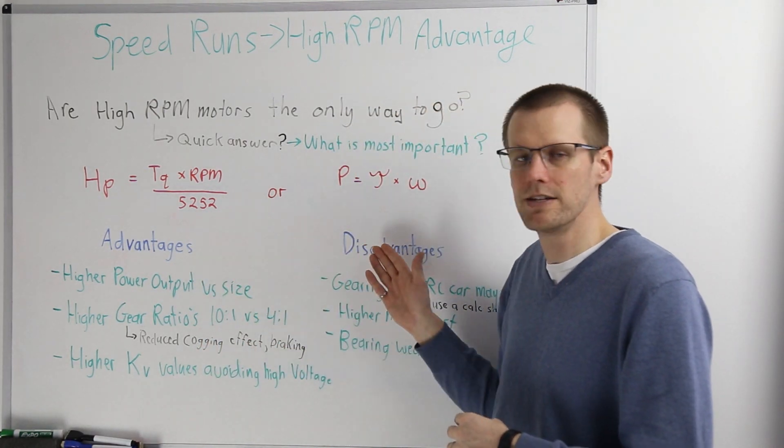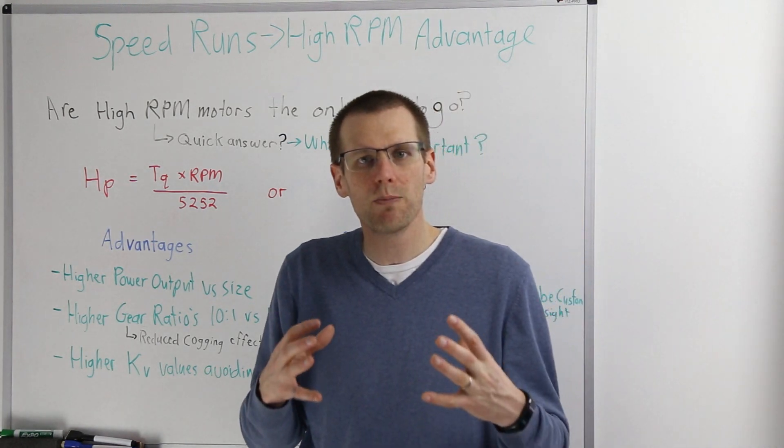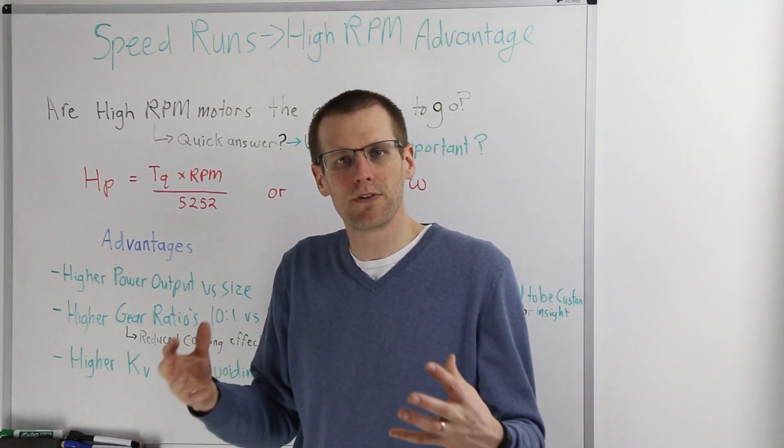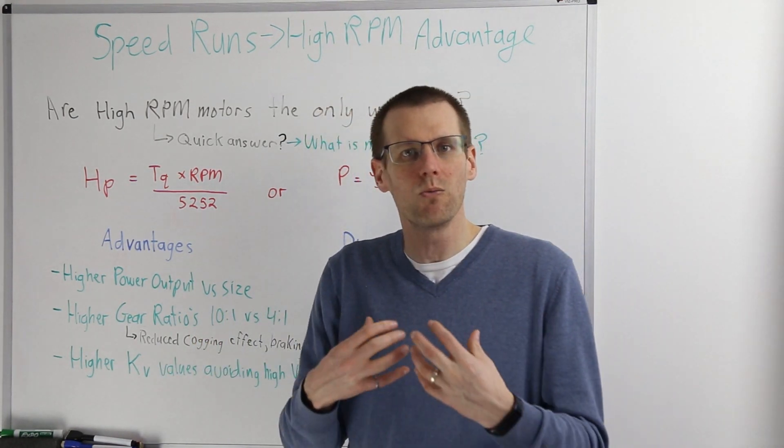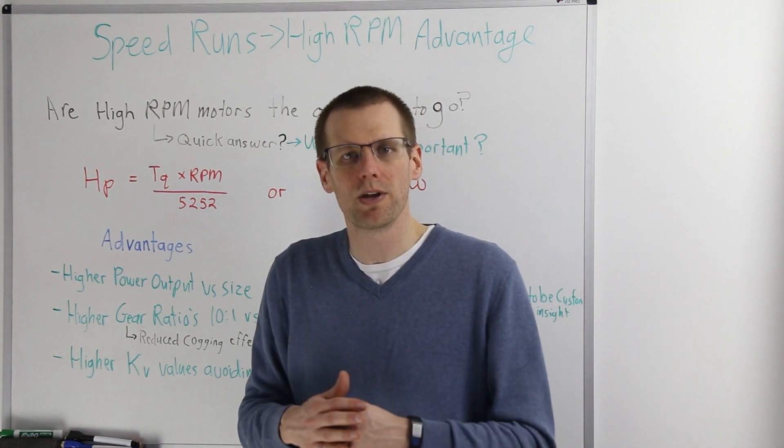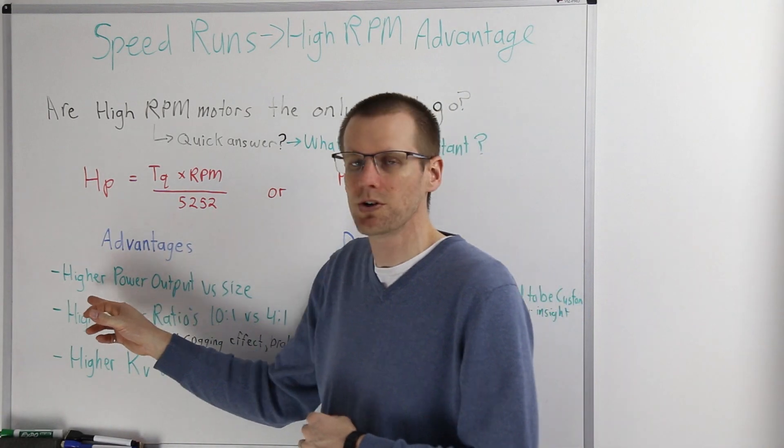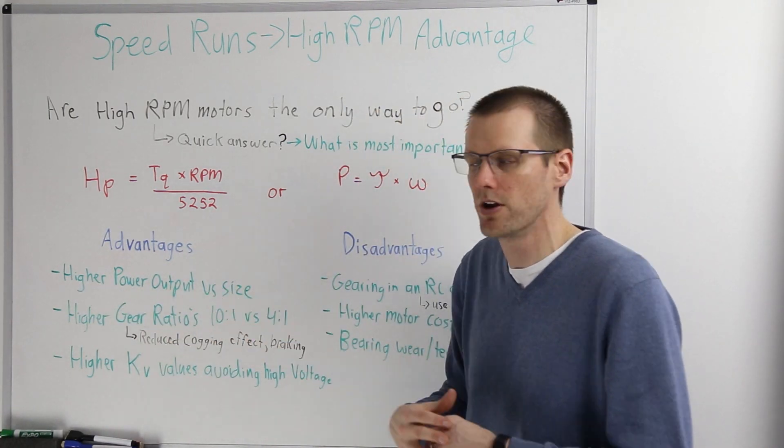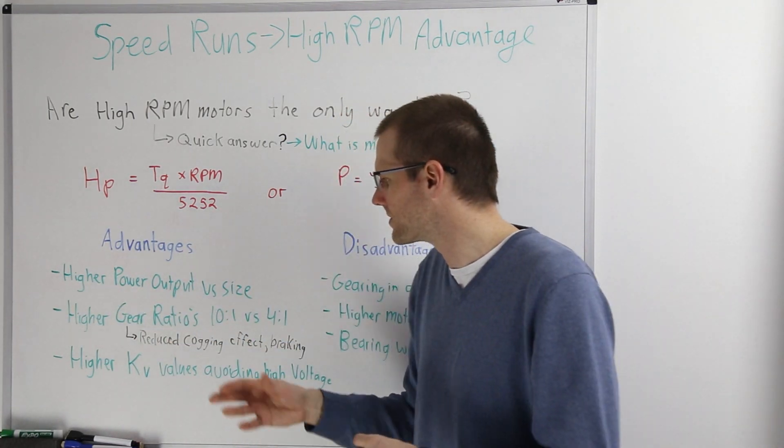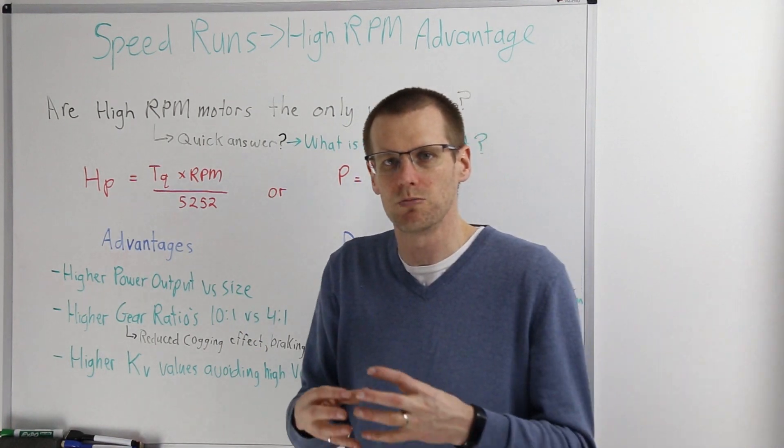The first one is the exact reason why we would want to use high RPM brushless motors for our top speed run RC cars. And that's because we're going to get a higher power output from those motors versus the specific size of our brushless motor. What we're ultimately interested in is just this part primarily. A high power output is exactly what we want.